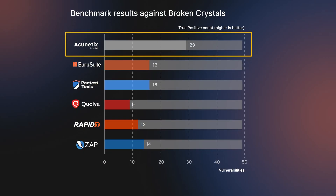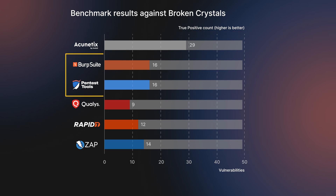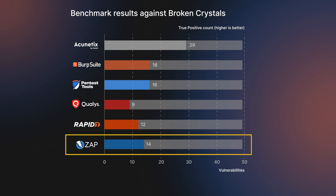Acunetix leads the pack when it comes to detecting vulnerabilities in Broken Crystals. The pentesttools.com Website Vulnerability Scanner and Burp are tied for second place, while ZAP outperformed both Qualys and Rapid7 InsideVM.